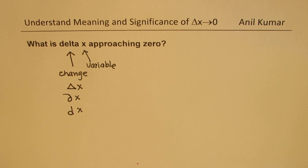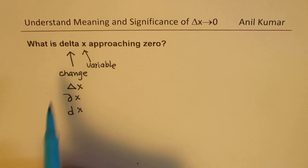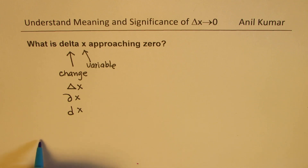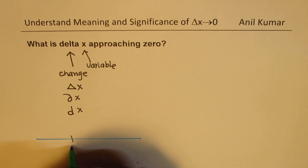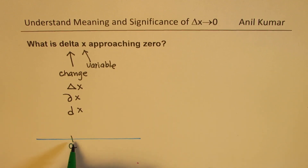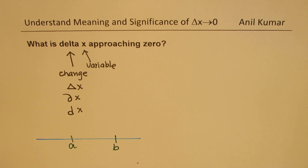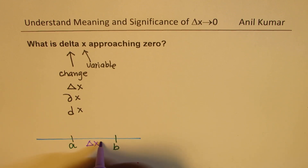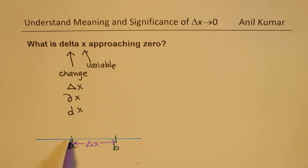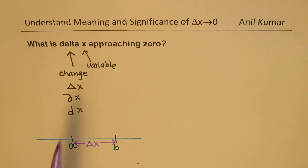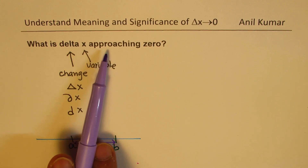Let's keep it as a straight line for the time being — a single variable of order one. Let us say we have a point A, and this position A changes to position B. In that case, Delta X will be this change from A to B — that change from position A to position B is referred to as Delta X.